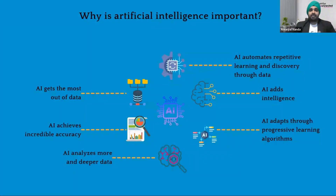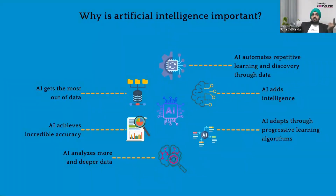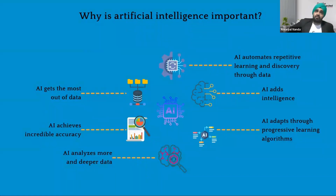Moving to the next slide — why is AI important? I'd like you to look at this cyclically, from AI automates repetitive learning to AI gets most of the data. Automating repetitive learning is different from just automating manual tasks — it has high frequency and high volume data, and it has to learn while doing it to handle simple variations. The second point is AI adds intelligence. Think about using Siri on your iPhone — the more you talk to Siri, it will understand your patterns, your behavior, your ask. That's how AI gets intelligent.